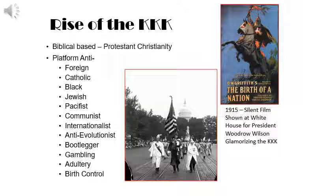This nativist activity gave rise to the KKK — a Protestant Christian terror group with a platform of being anti-foreigner, anti-Catholic, anti-Black, anti-Jewish, anti-pacifist, anti-communist, anti-internationalist, anti-evolutionist, anti-bootlegger, anti-gambling, anti-adultery, and anti-birth control. They specifically wanted anyone who was non-white, non-male, or non-Christian to not be allowed in America, and terrorized those already here.